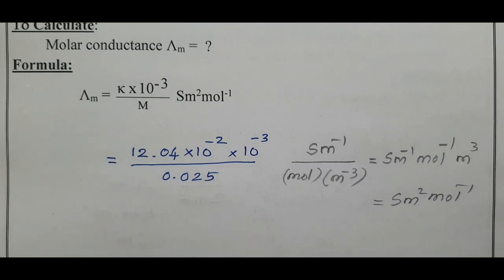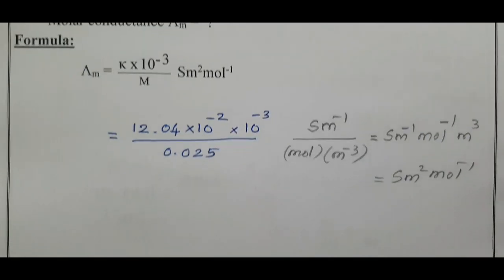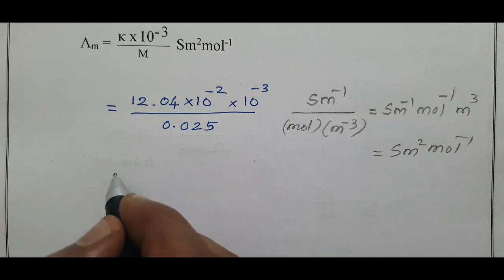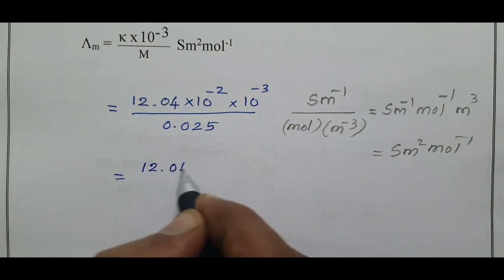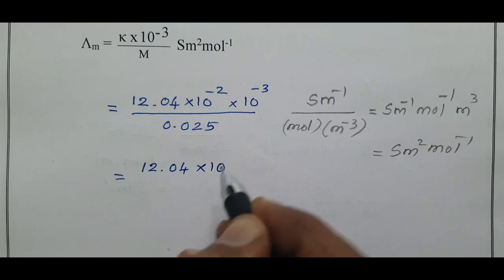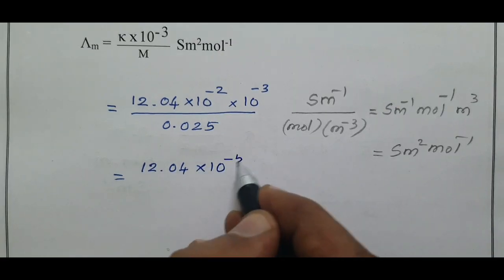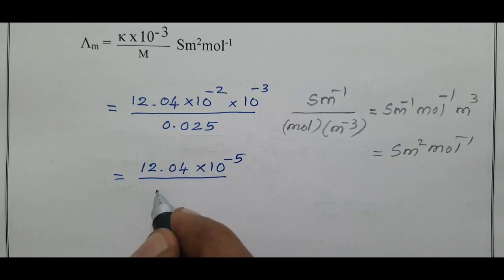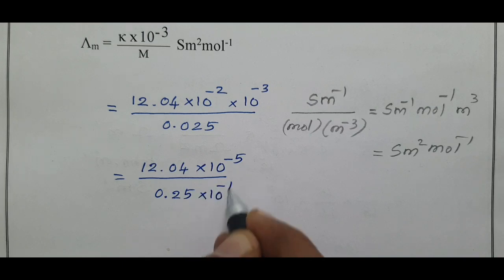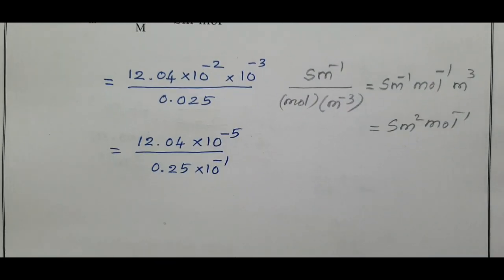S·m²·mol⁻¹ is the unit of molar conductance. For easy cancellation, we convert: 10⁻² × 10⁻³ gives 10⁻⁵, so the numerator becomes 12.04 × 10⁻⁵. The denominator 0.025 can also be written as 0.25 × 10⁻¹.